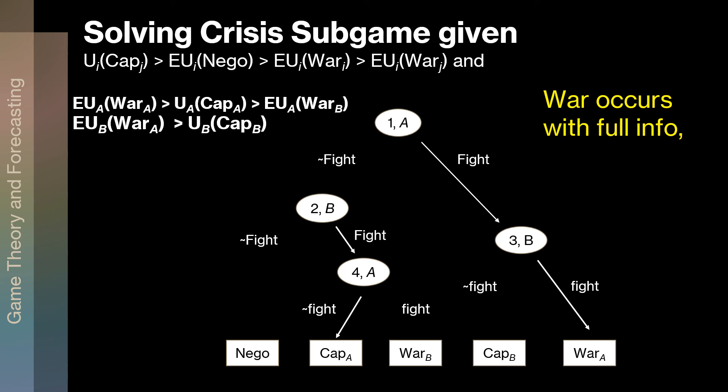Now for player A's final decision: if A doesn't fight, B will fight, and A knows that if it lets B go first, A will capitulate at node four. But if A fights now, B will fight back, and we get war A. But war A is better than capitulating. So — we get war in full information. This was actually something of a result: war occurs with full information. Largely it's a situation where A has failed to deter B. Given the empirical analysis by Bueno de Mesquita and Lalman, they said this actually happens a lot. Their counterintuitive result is that we can, in fact, have war with full information — it doesn't always require uncertainty.